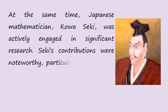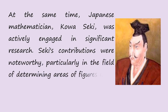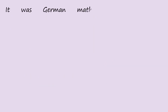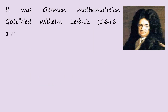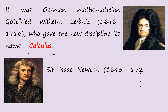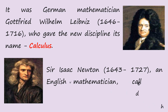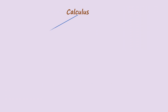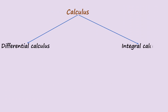Seki's contributions were noteworthy, particularly in the field of determining areas of figures using integrals, which involved extending the method of exhaustion. It was German mathematician Gottfried Wilhelm Leibniz who gave the new discipline its name, calculus. Sir Isaac Newton, an English mathematician, called his version of calculus fluxions. Calculus is divided into two: differential calculus and integral calculus, bridged by the fundamental theorem of calculus.